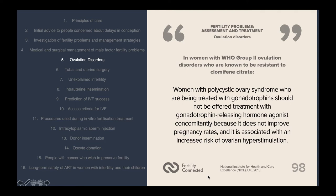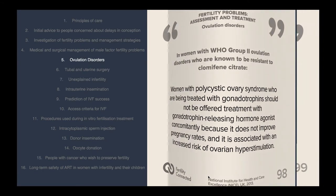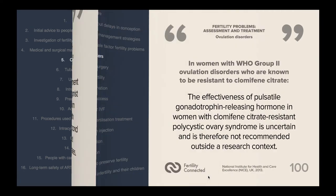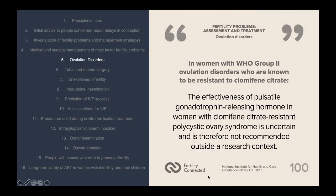Women with polycystic ovary syndrome being treated with gonadotrophins should not be offered gonadotrophin-releasing hormone agonist concomitantly, because it does not improve pregnancy rates and is associated with an increased risk of ovarian hyperstimulation. The use of adjuvant growth hormone treatment with GnRH agonist and/or human menopausal gonadotrophin during ovulation induction in women with PCOS who do not respond to clomiphene citrate is not recommended. The effectiveness of pulsatile GnRH in clomiphene-resistant PCOS is uncertain and is not recommended outside a research context.